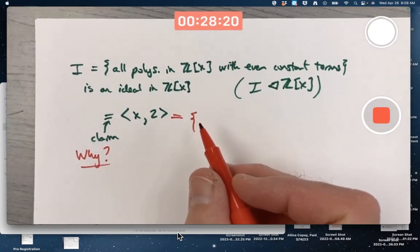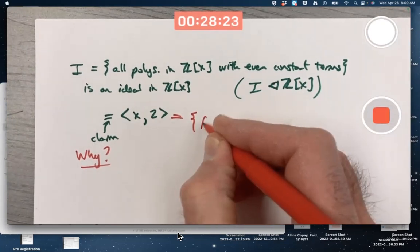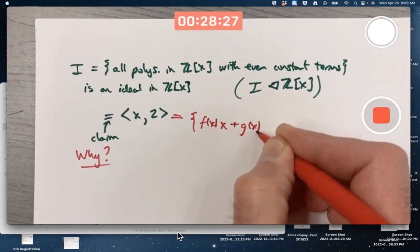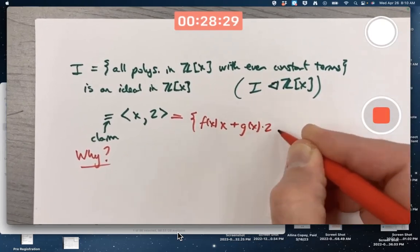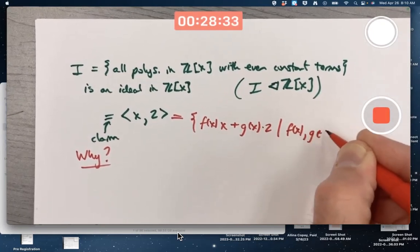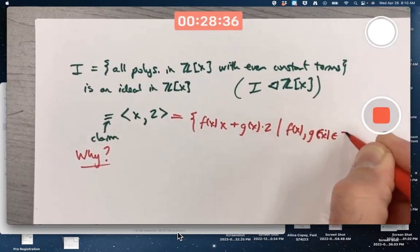They're really polynomials in Z[x]. Set of all you could write it as f(x) times x plus g(x) times 2 as f(x) and g(x) vary over Z[x].